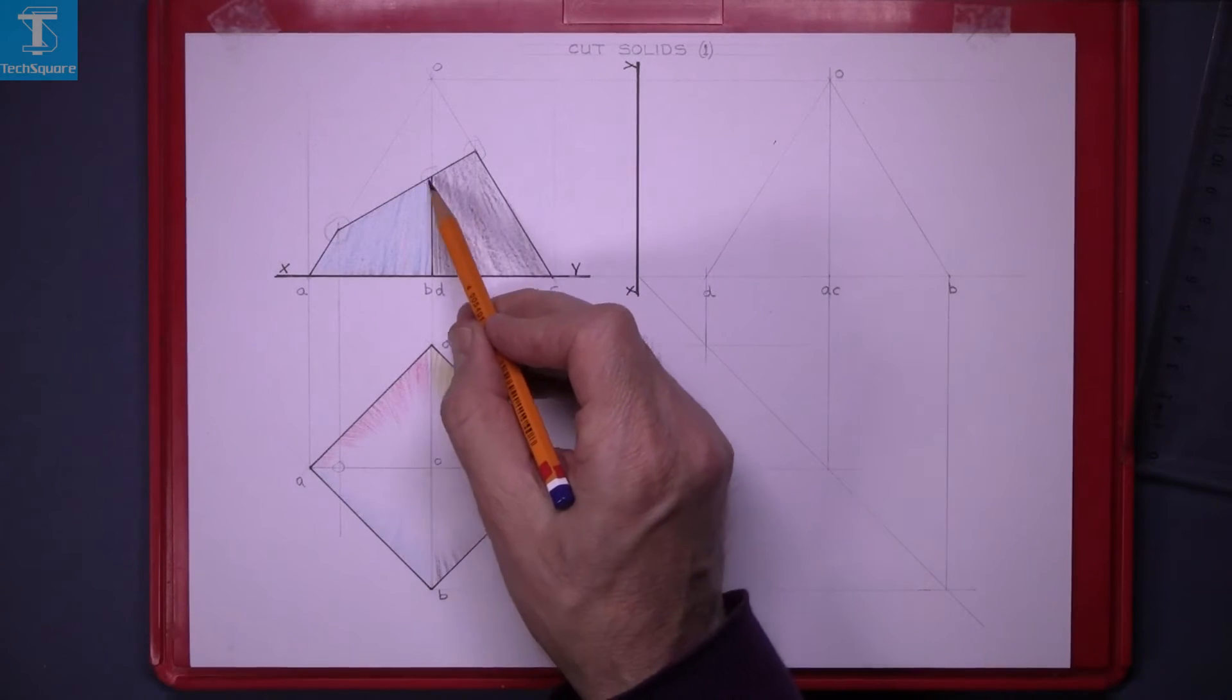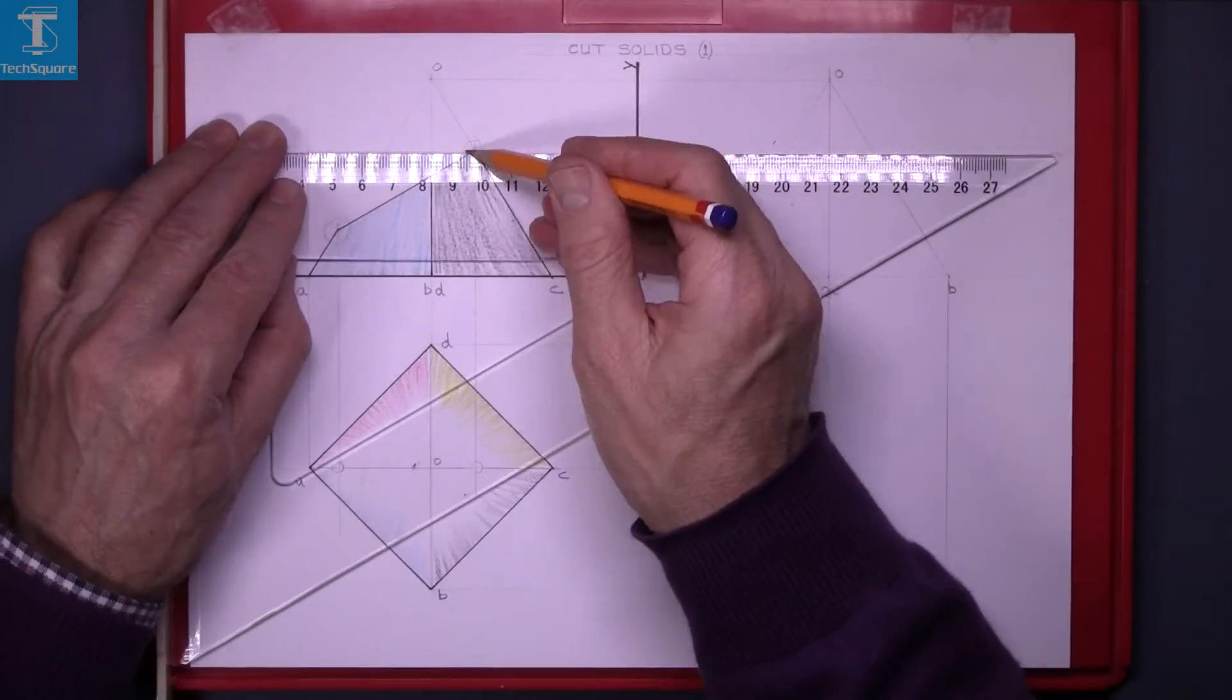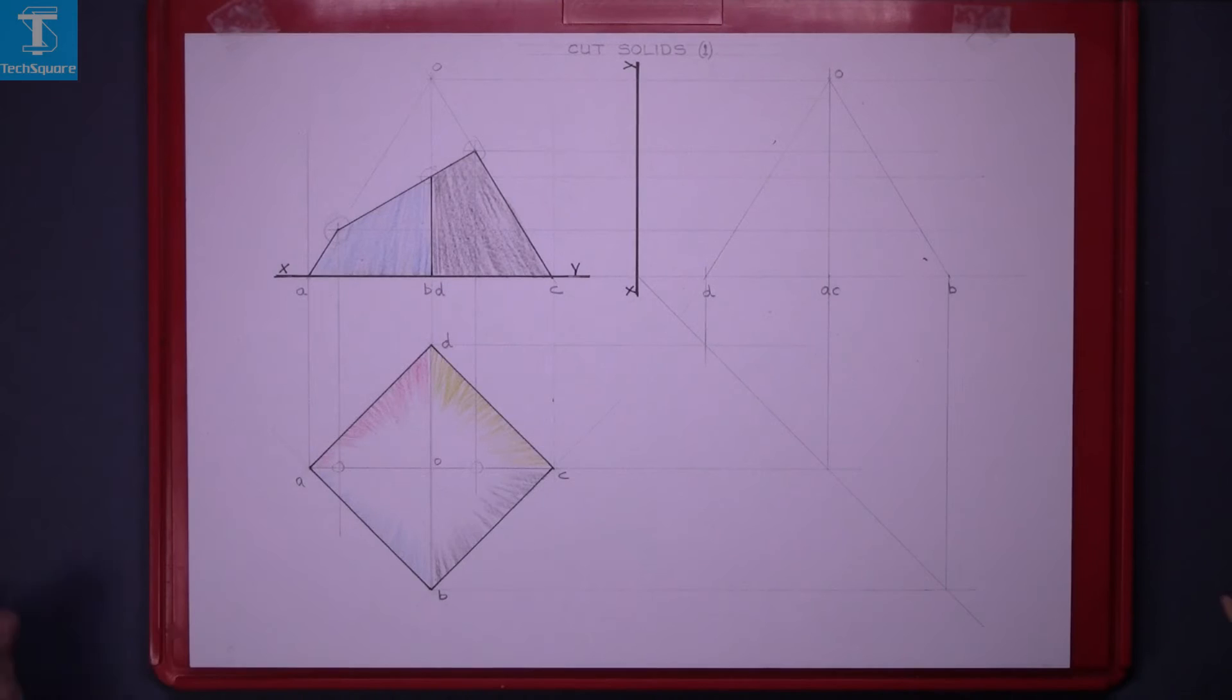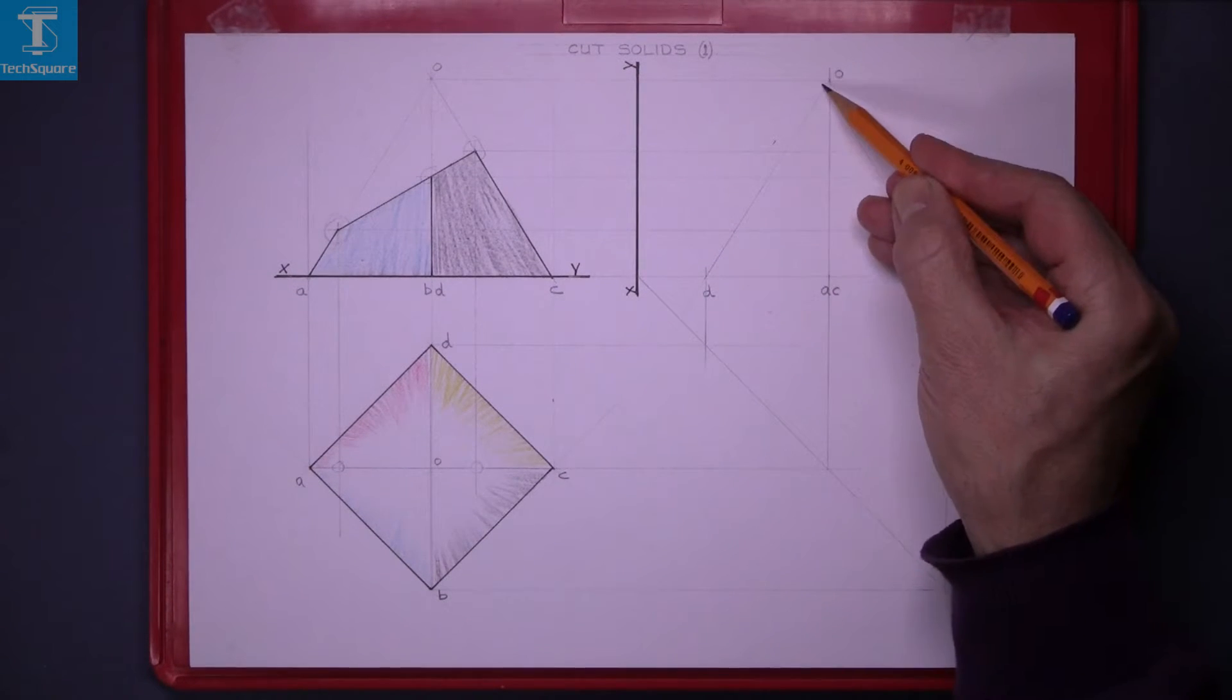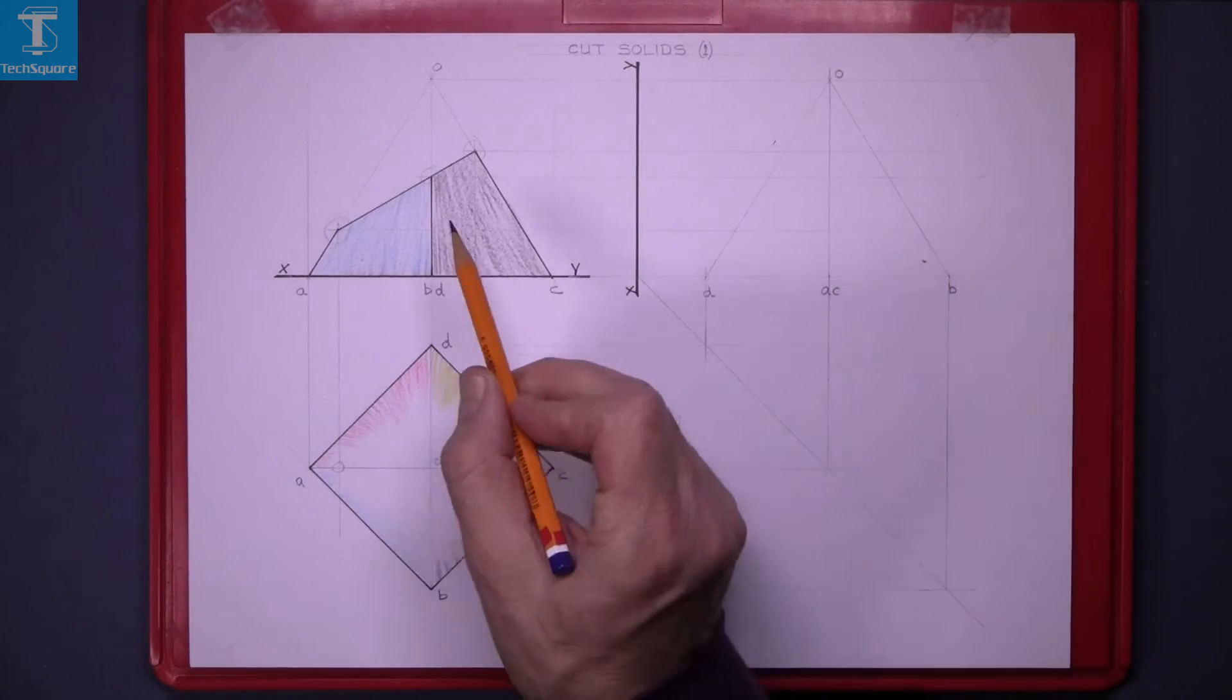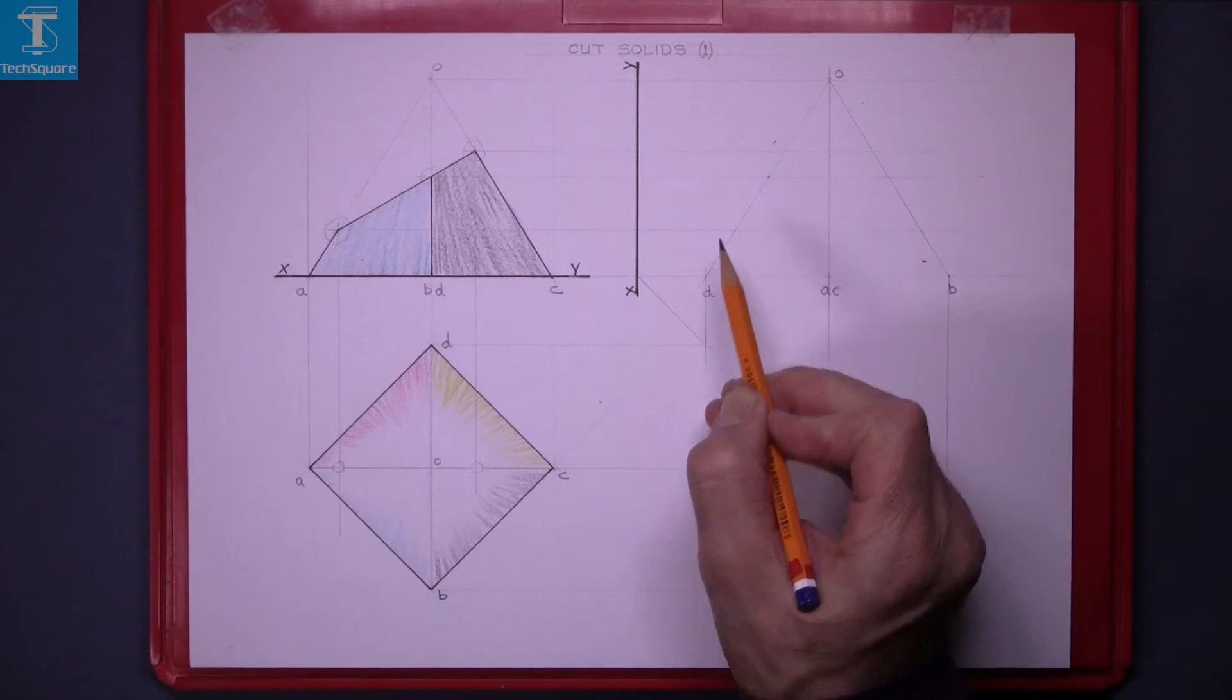To get these points here we draw horizontally across to the end view and now this is point D here and that's DO. The elevation of DO is this vertical line here and it's cut at this point so that gets us a point on DO.